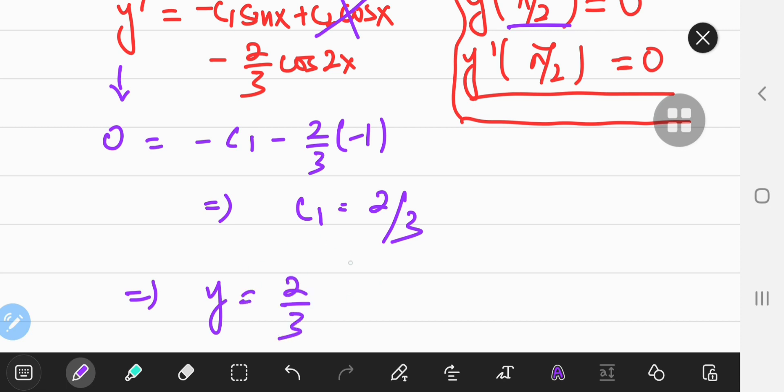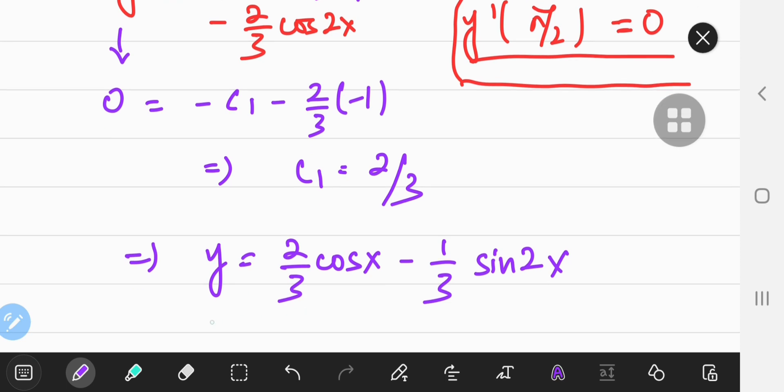And our solution to the differential equation is 2 thirds of the cosine of x and c2 was 0 anyway, then minus one third sine 2x. So there you have it. That's the solution to the differential equation.